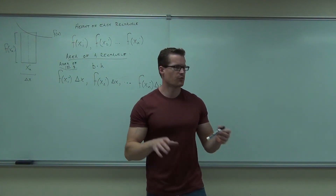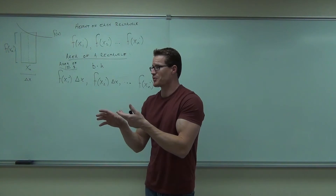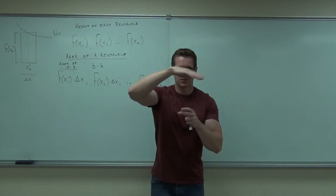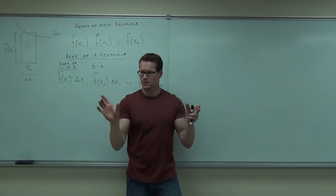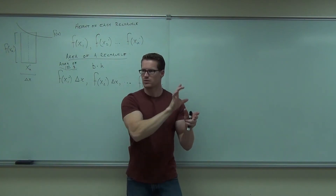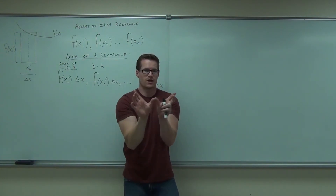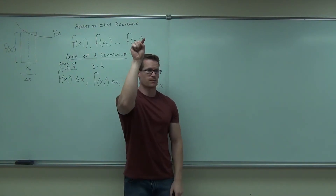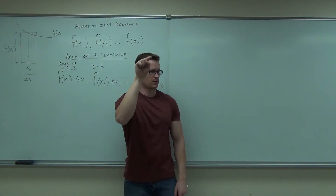What have we done really? We've broken up — it's actually basic geometry is what we've done. We've broken up this curve, the area under the curve, the interval into little equal rectangles. Well, actually segments. For each segment, we pick an arbitrary point. At each arbitrary point, we find the height, and to find the area you multiply base times height. That's all we've done.